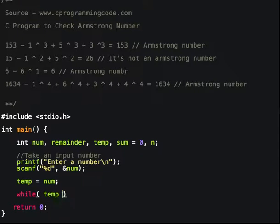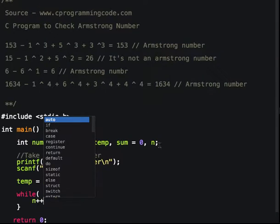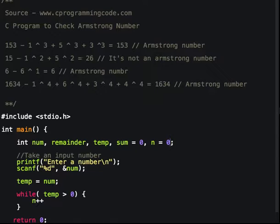Suppose if temp is greater than 0, then what I am doing is incrementing the value of n, which is initially assigned to 0, and reducing the value of temp by dividing by 10.